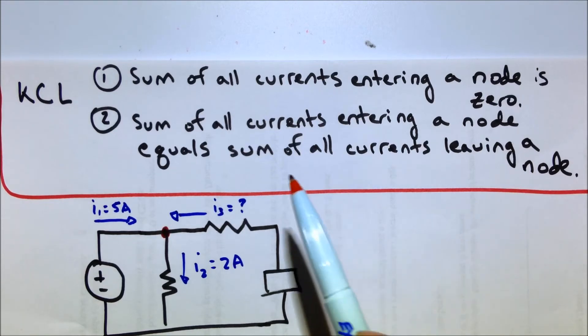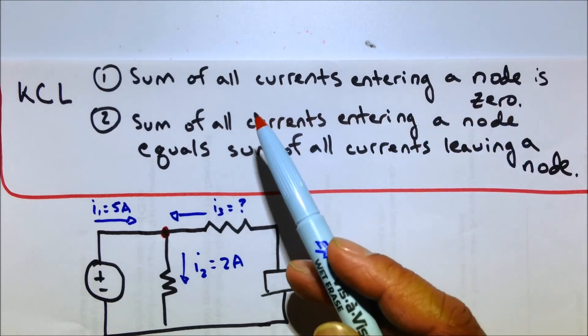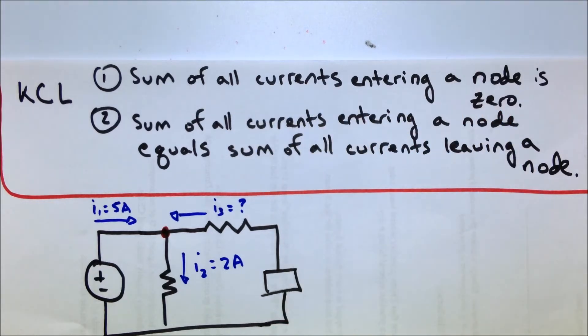Wait, that's kind of strange, because shouldn't the sum of all currents entering a node be equal to zero, as that guy said up top there? Yeah. So let's define or discuss what that means.